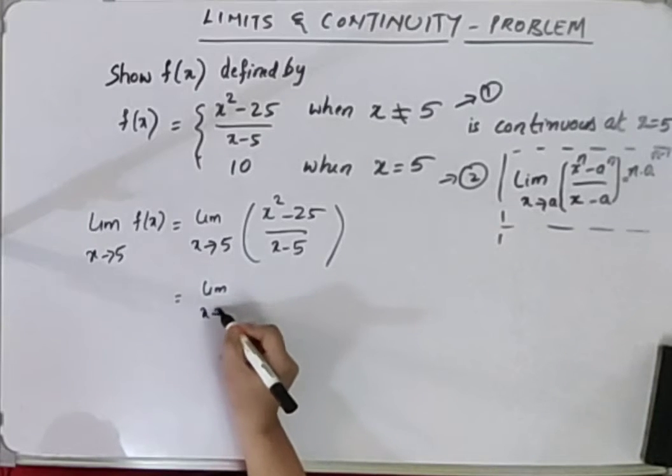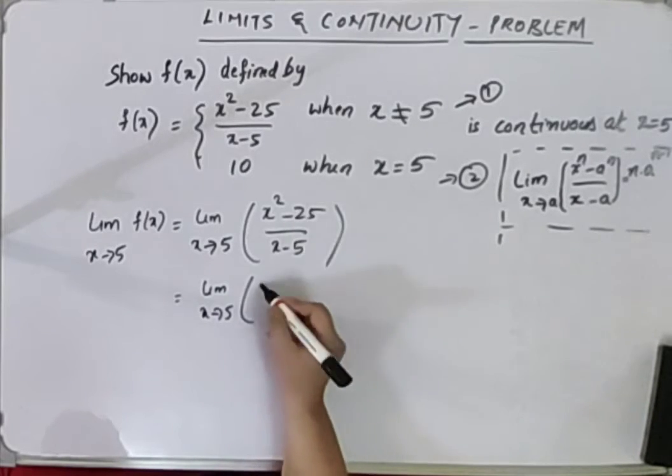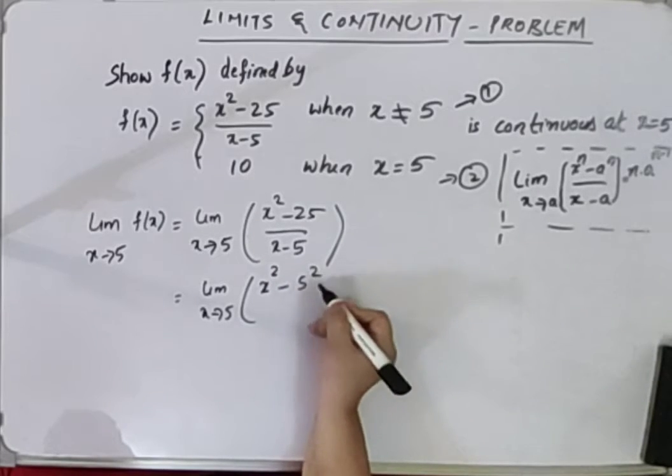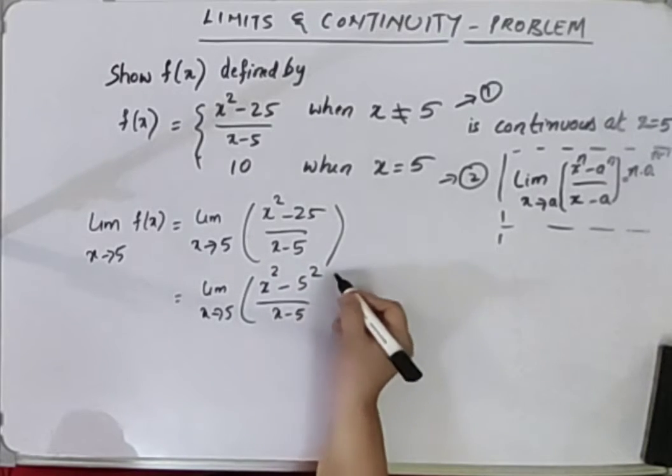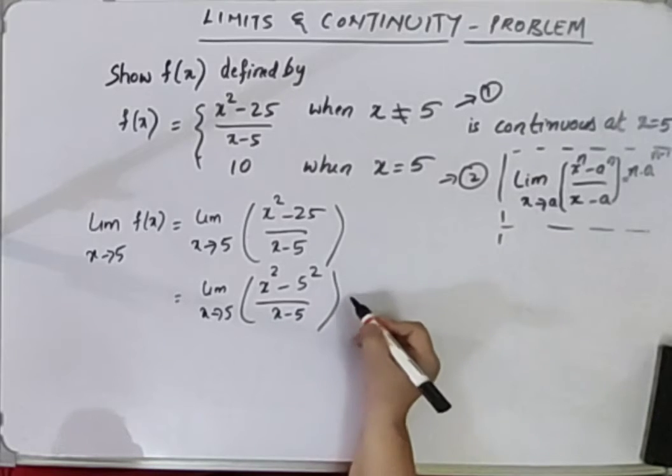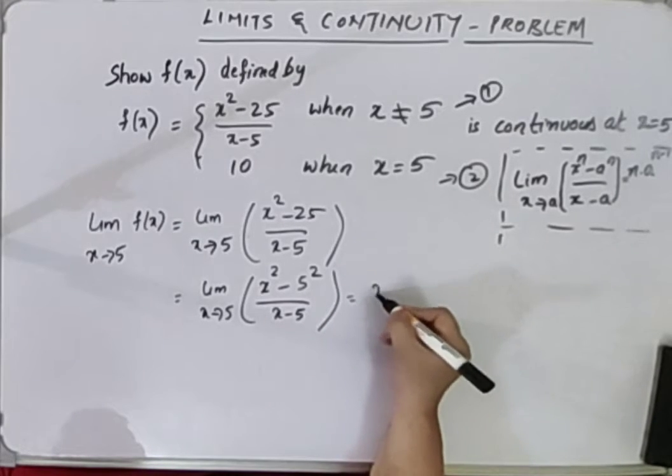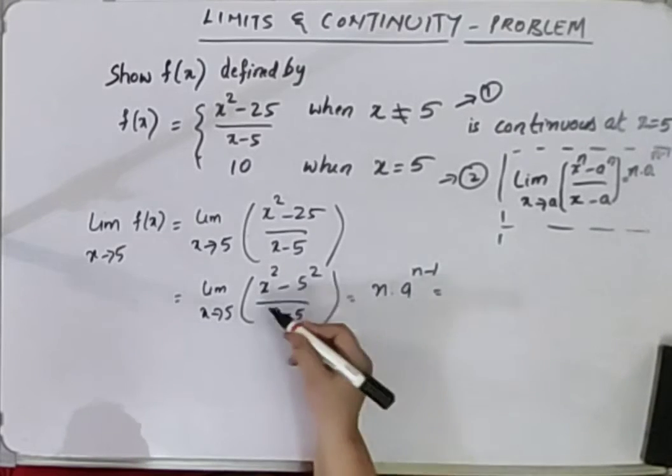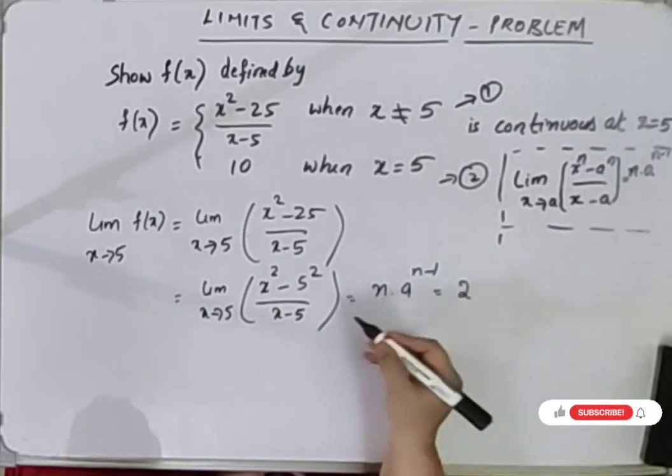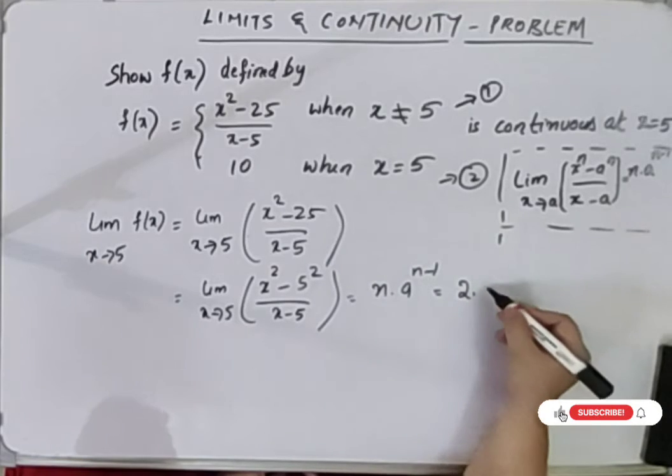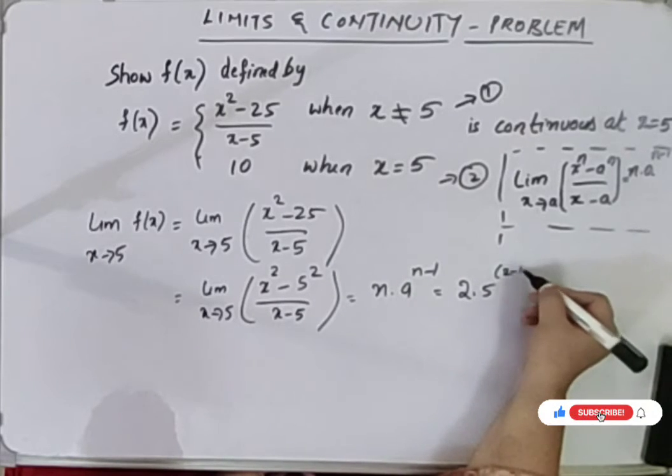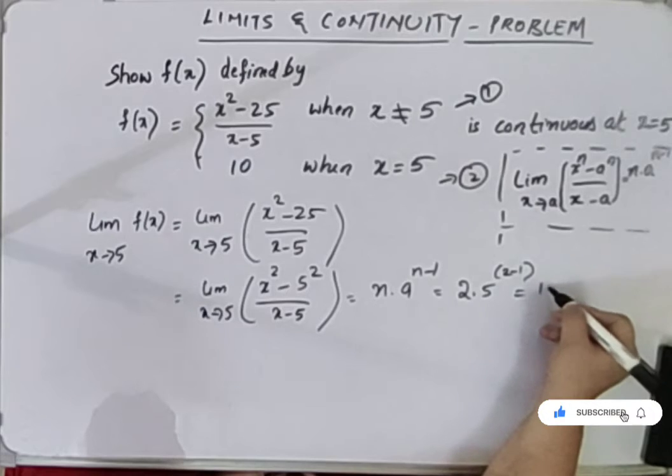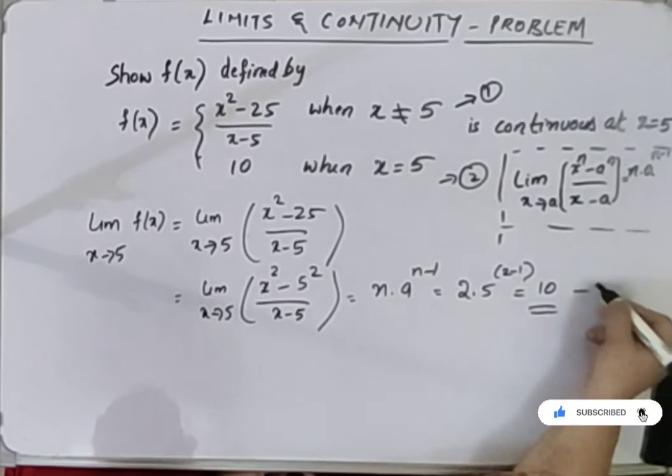Limit x tending to 5. Let's bring it to x squared minus 25 is 5 squared, x minus 5. Now this is nothing but n times a to the power of n minus 1. What is n? What is a? 5 into n minus 1 is 2 minus 1 which is 10. This is equation 1.